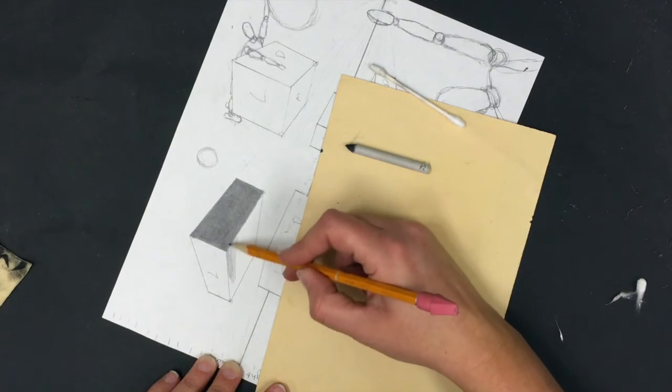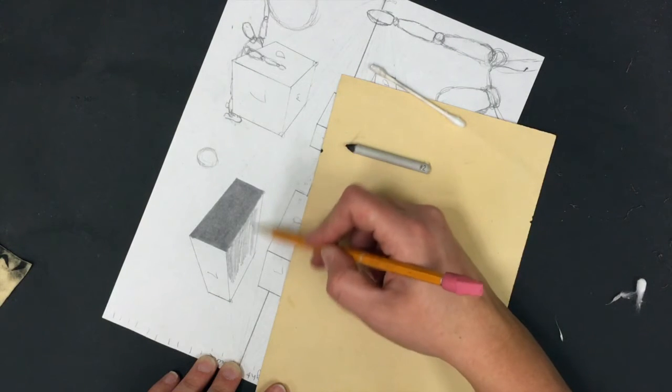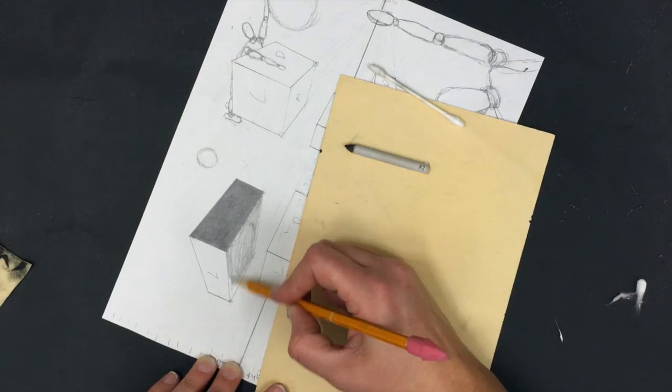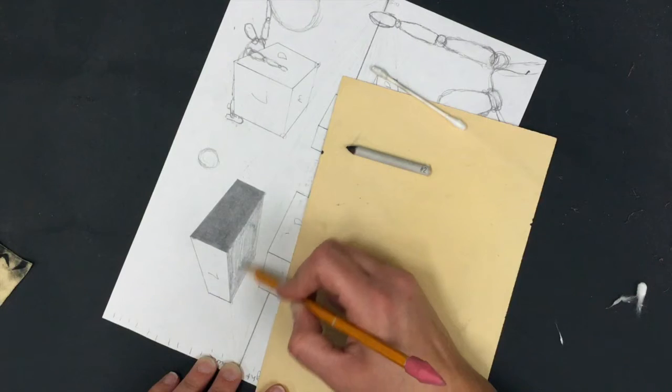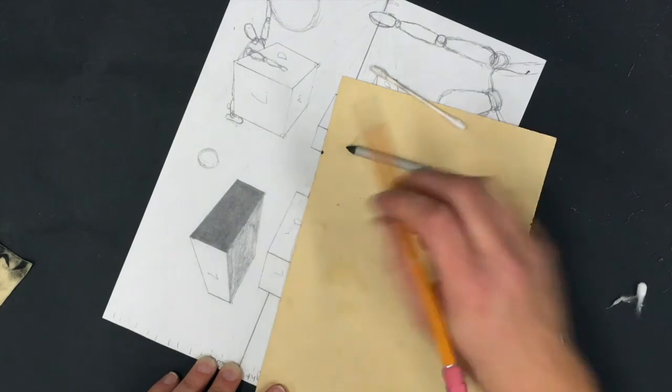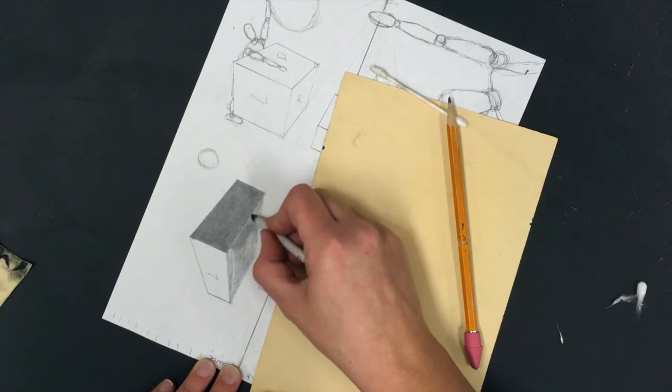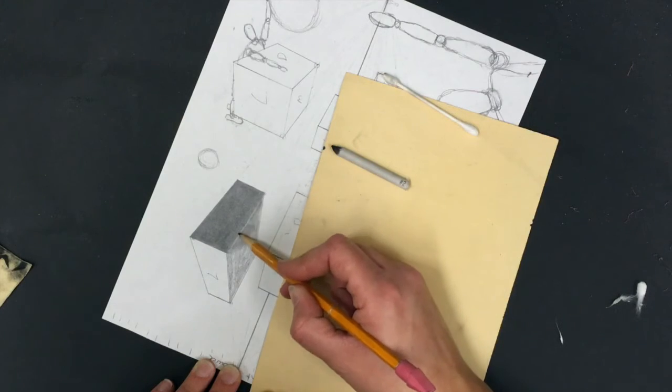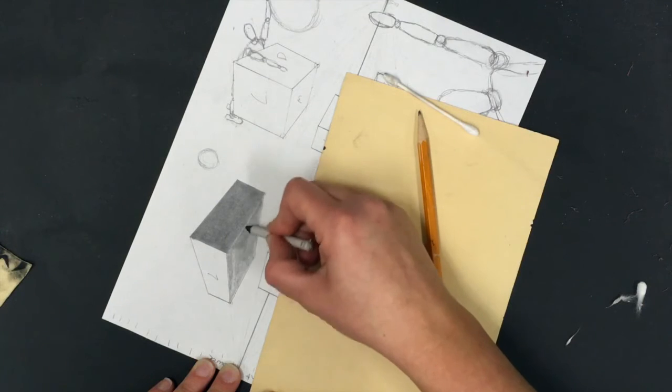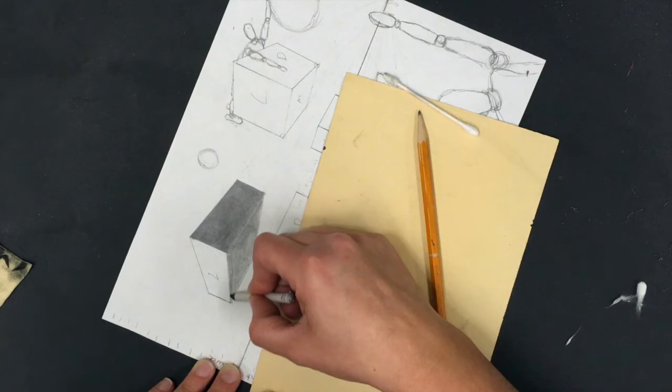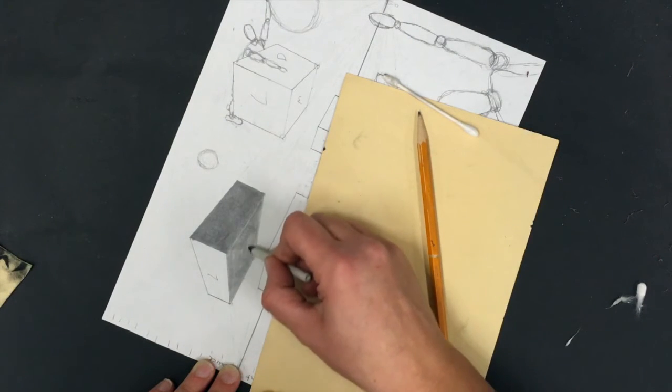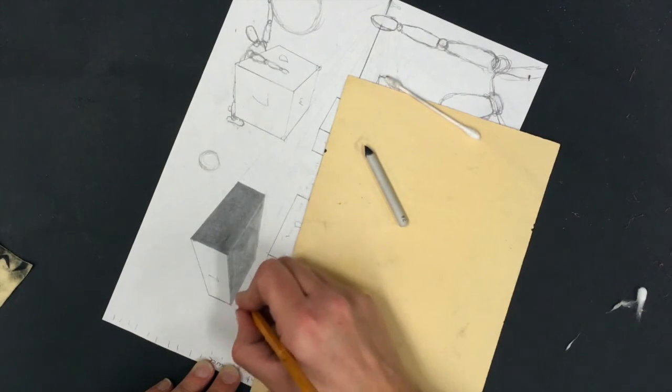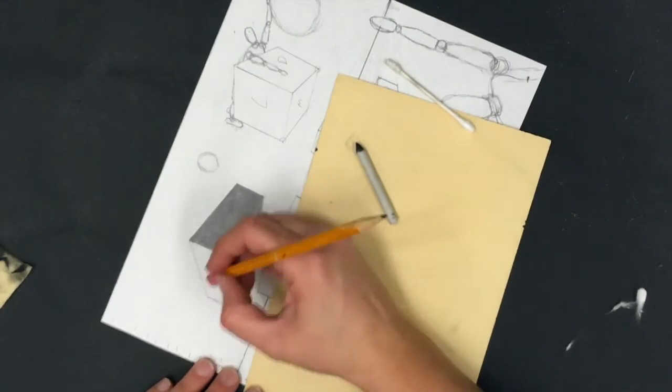I know I have my middle value here, so I'm gonna erase my M and apply middle value to my box. I'm not pressing hard at all, just putting in a tone that is distinctly lighter than my dark value but not so light that it's like the white of the paper. I'm gonna smudge again, bringing my smudging right up to the edge.